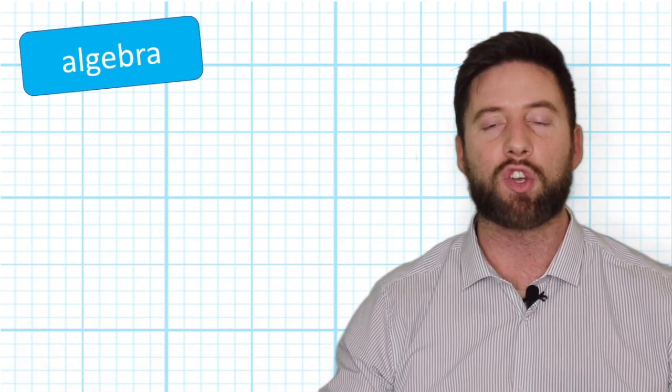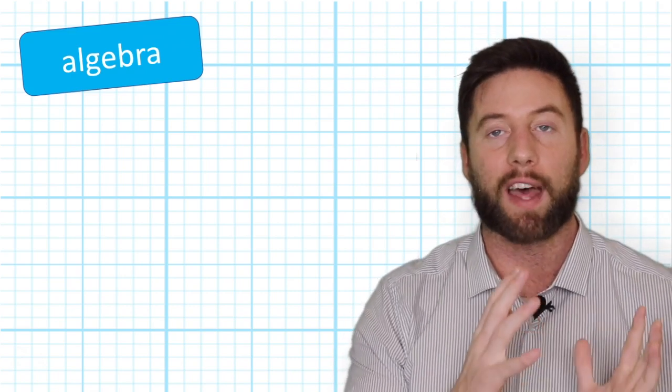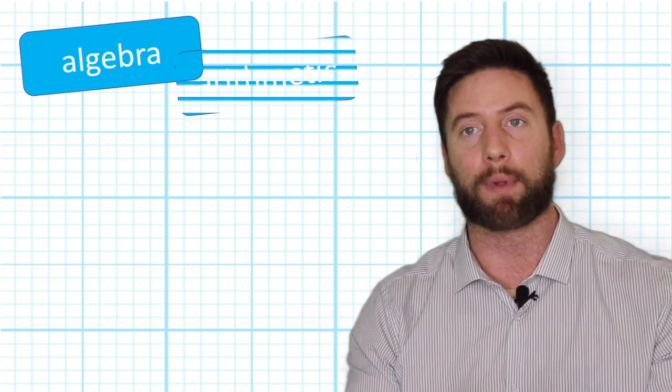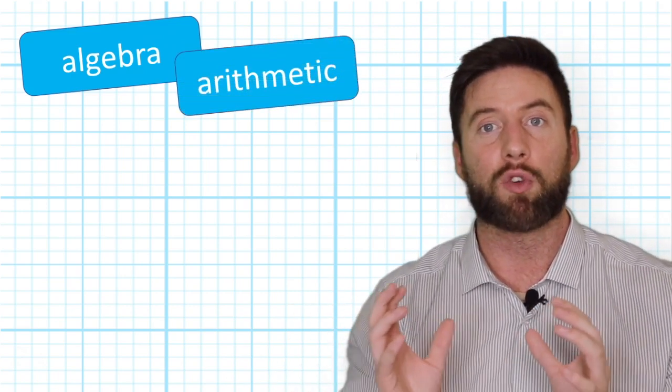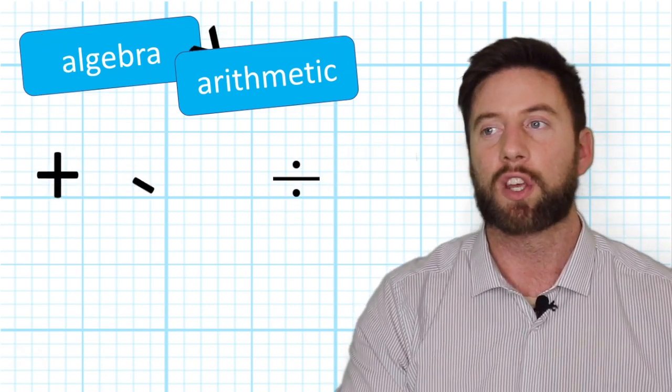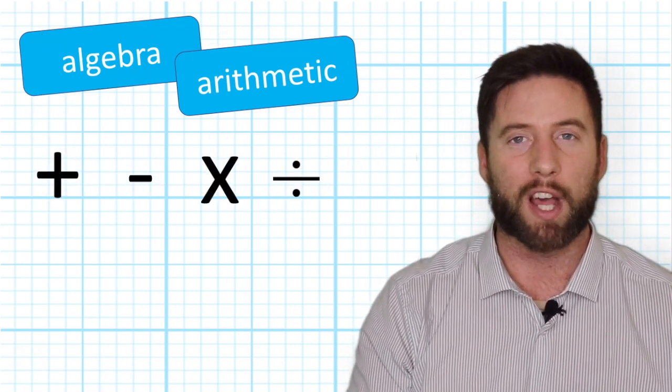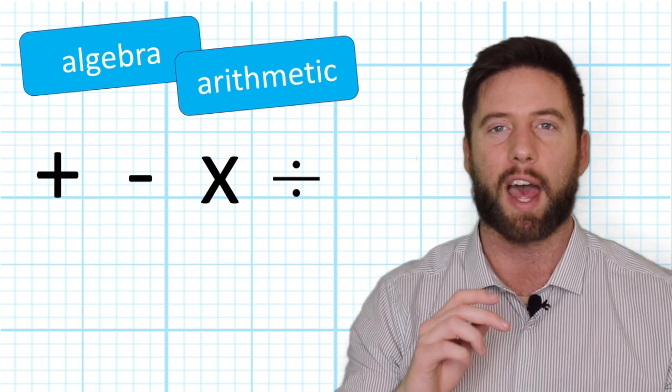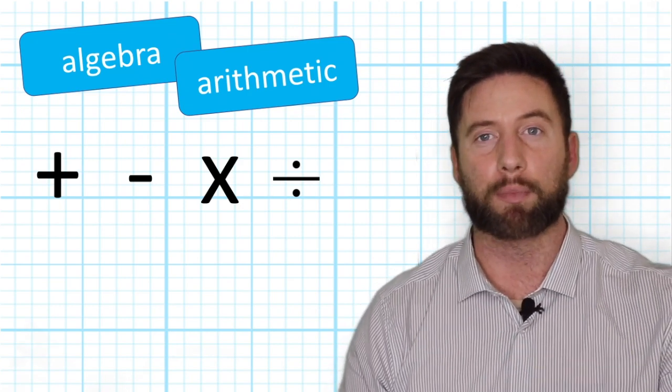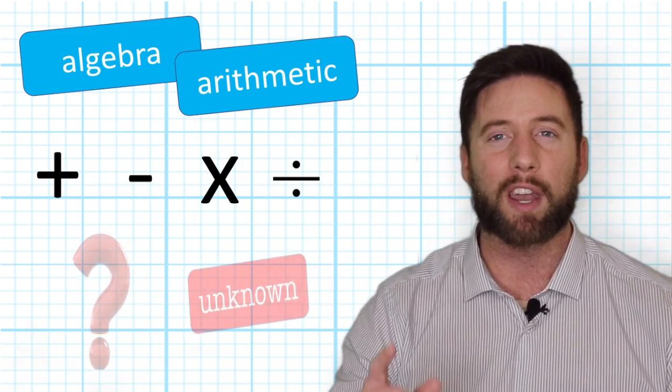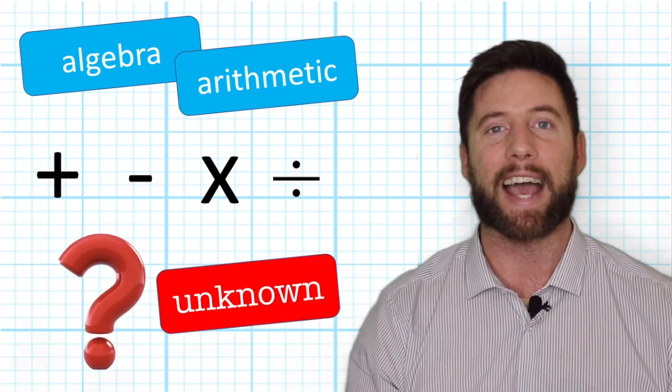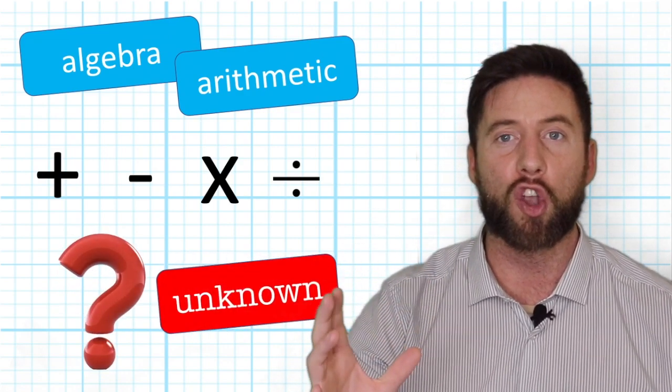The very first thing you need to understand is that algebra is very similar to arithmetic. It uses the same four operations: addition, subtraction, multiplication, and division. But algebra introduces a brand new aspect, and that is the aspect of the unknown.